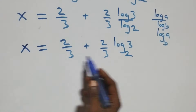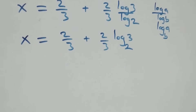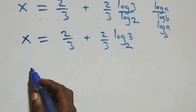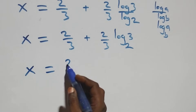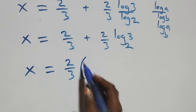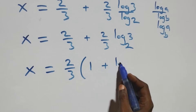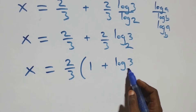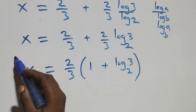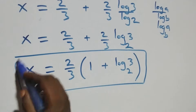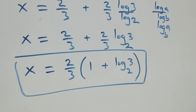Here, 2 over 3 is common, so we factor it out. We get x equals to 2 over 3 times the bracket (1 plus log 3 base 2). So the value of x in this given problem is x equals to 2 over 3 times (1 plus log 3 base 2).